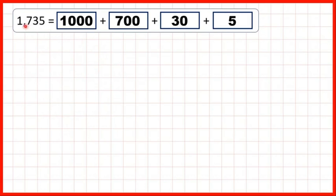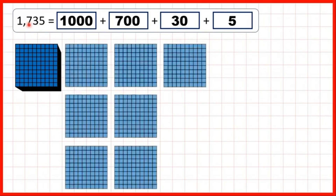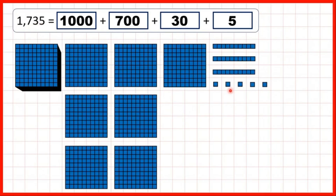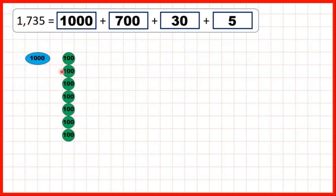Then we have the number one thousand seven hundred and thirty-five. That's one thousand, seven hundreds, three tens, and five ones. Or, using place value counters, we can show one thousand, seven hundreds, three tens, and five ones.